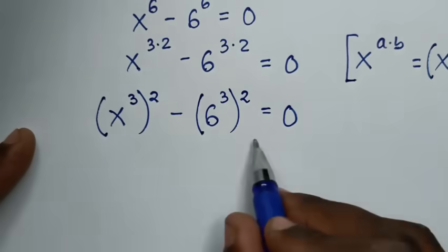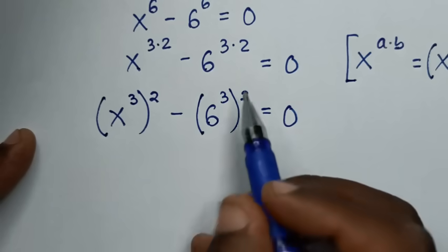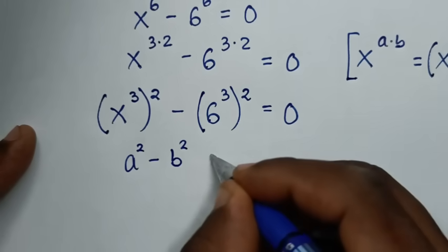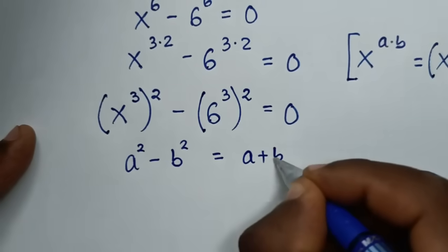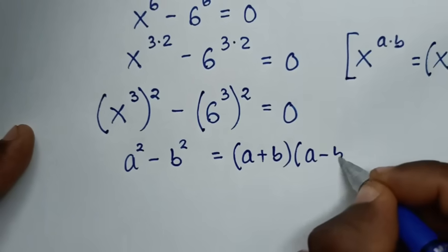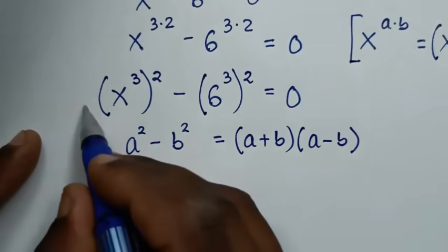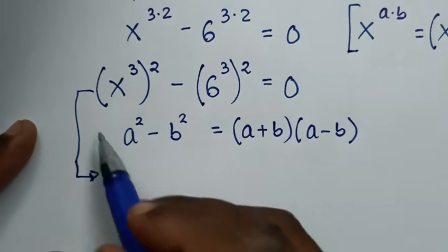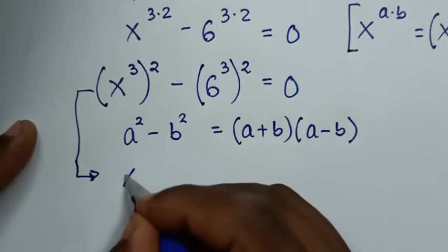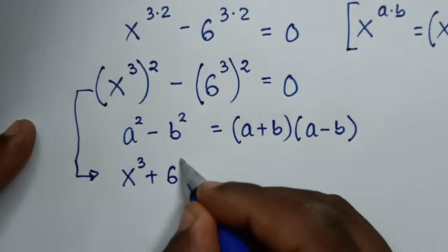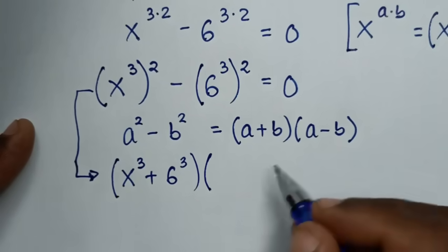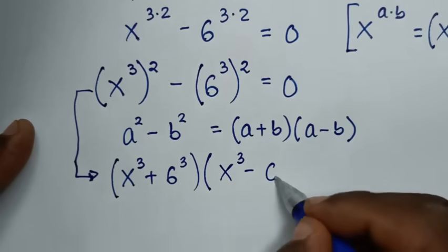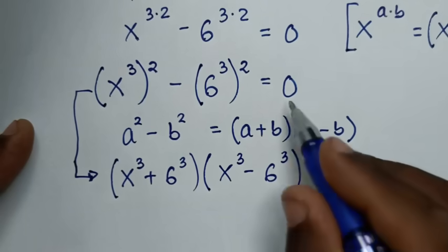Now this is in the form of difference of two squares, so we apply the difference of two squares rule, which is a squared minus b squared is equal to (a plus b)(a minus b). So from this equation, applying that form, it will be (x to the power of 3 plus 6 to the power of 3) times (x to the power of 3 minus 6 to the power of 3) is equal to 0.